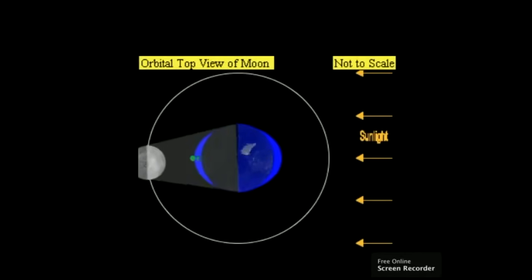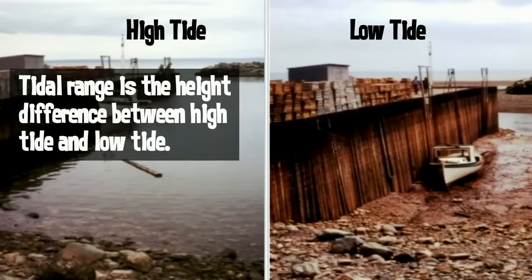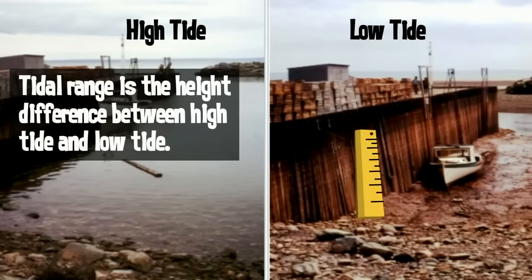Where the bulge is larger, it's high tide, and where it is smaller, it is low tide. In this picture, you can see the difference between high and low tide. Tidal range is the height difference between high tide and low tide.